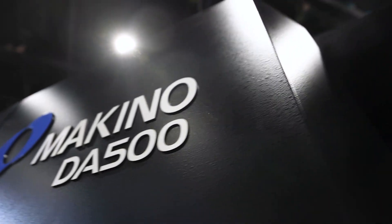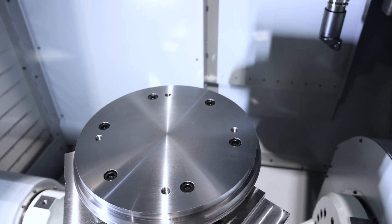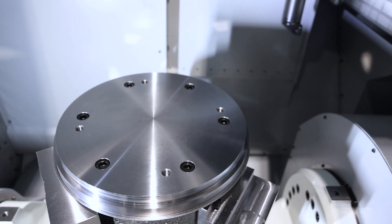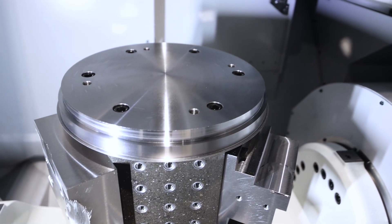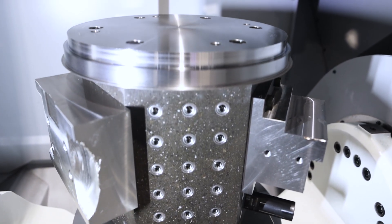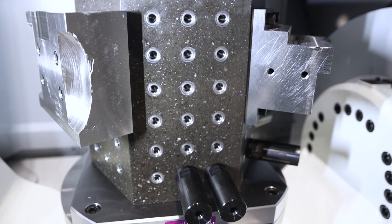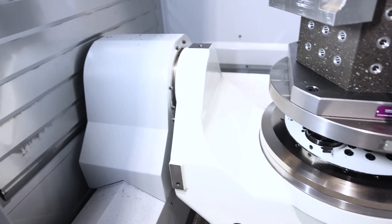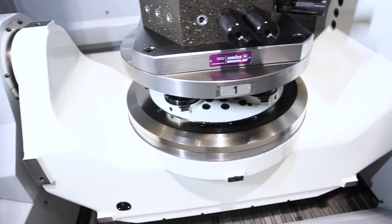The DA500 is the big brother to the DA300. We have a 500 millimeter round pallet. We have an A swing of plus 30 minus 120, so your standard trunnion style configuration, but this machine comes with a new twist.